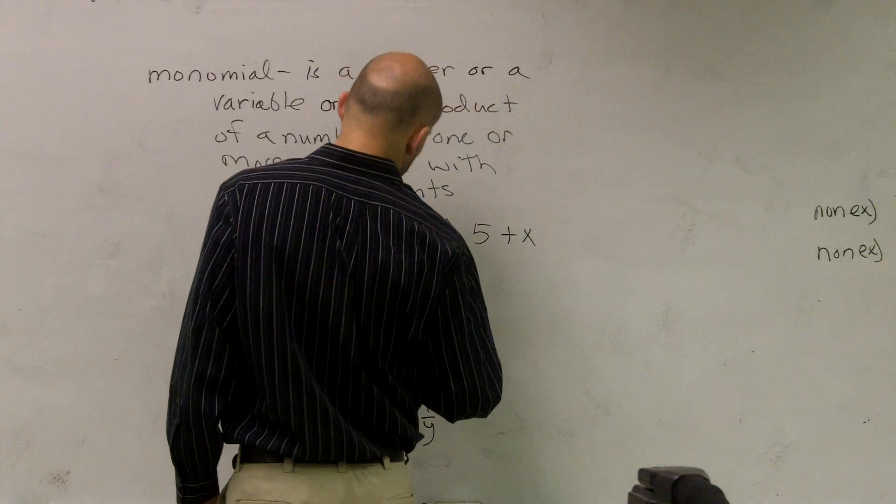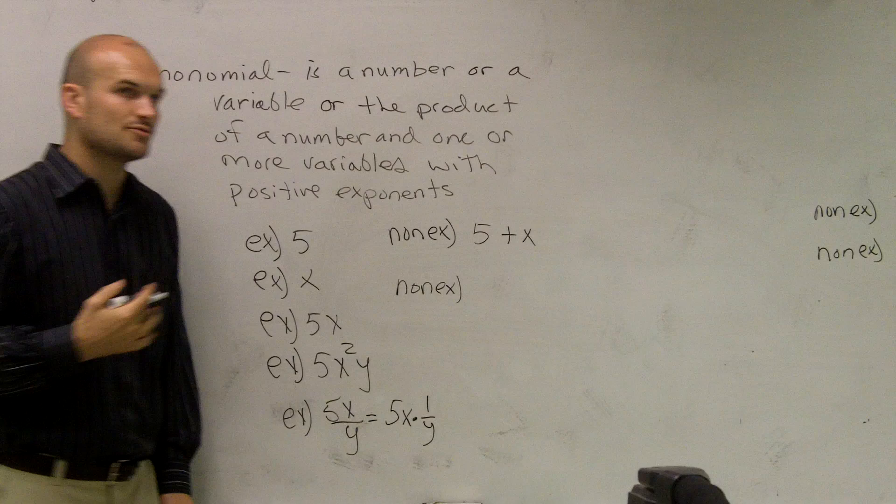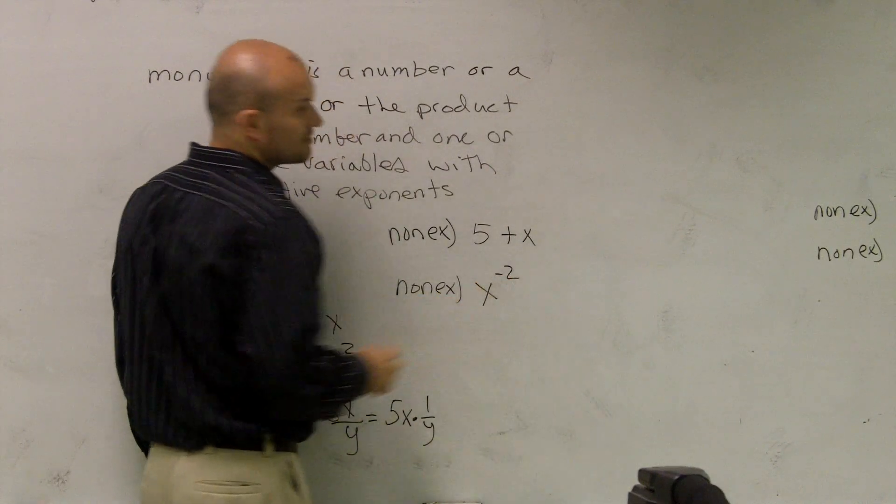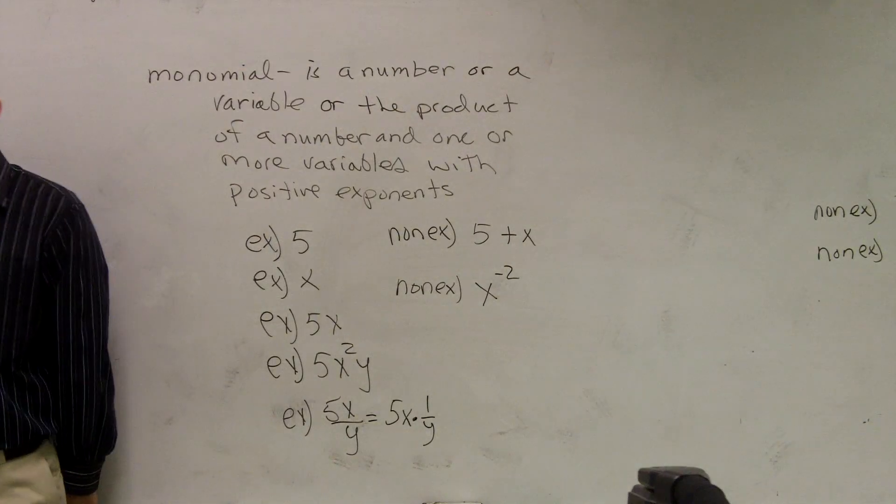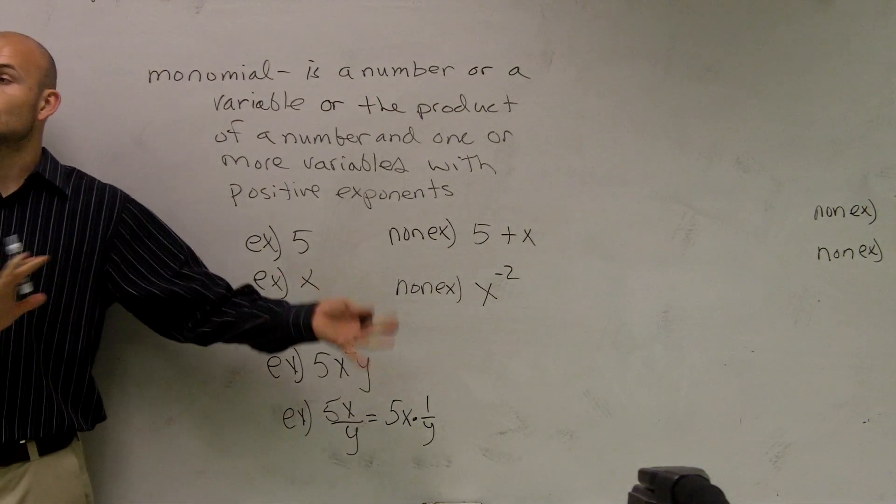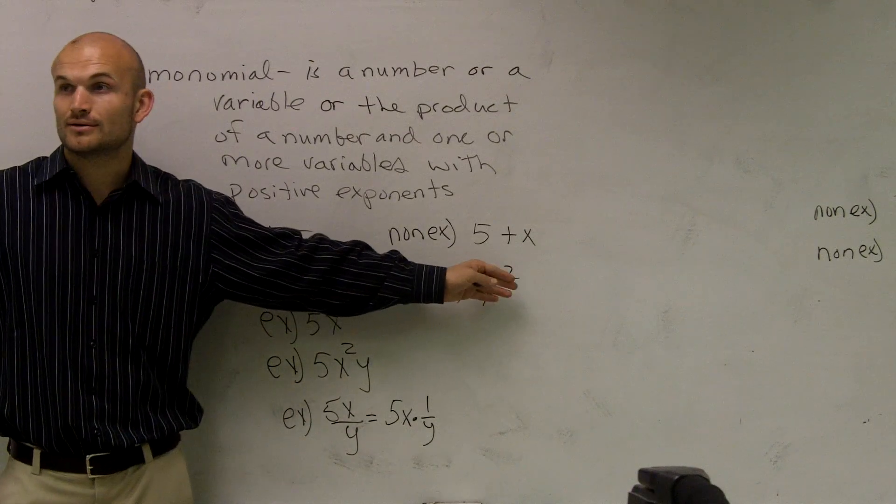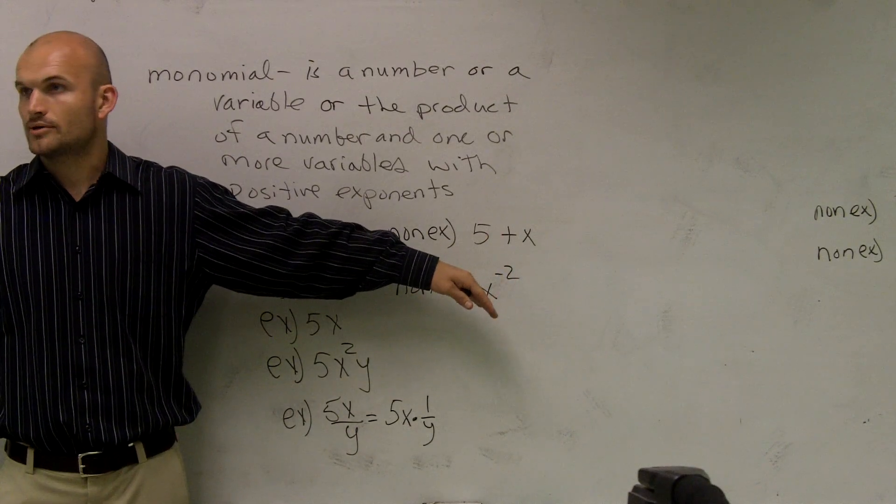And another non-example, which will show, I'll show you how to rearrange this so it looks like a monomial. But what if I said x to the negative second power? Now we're going to learn how to waste and make this look like a monomial. But right now, that is not a monomial. Because it's to a negative exponent.